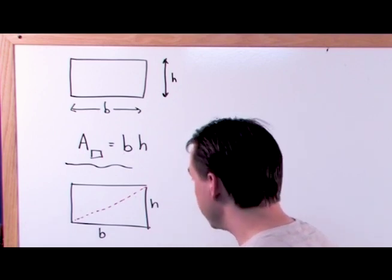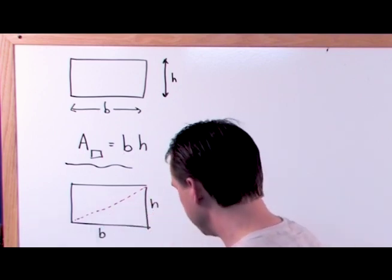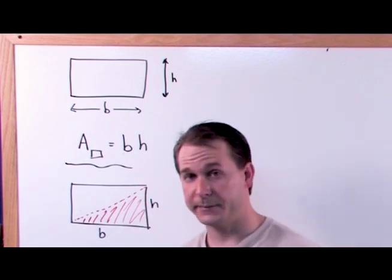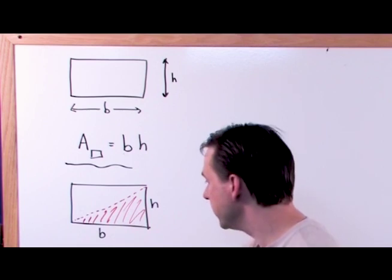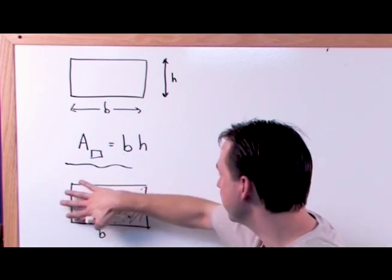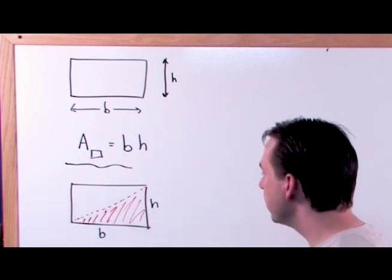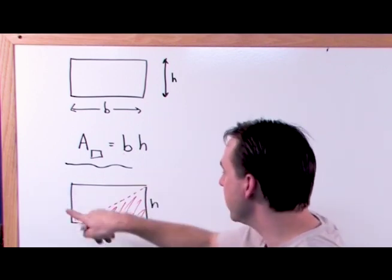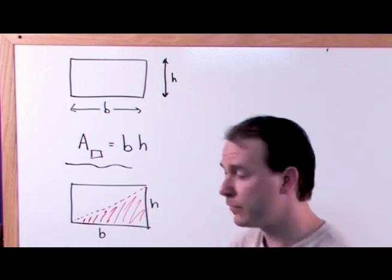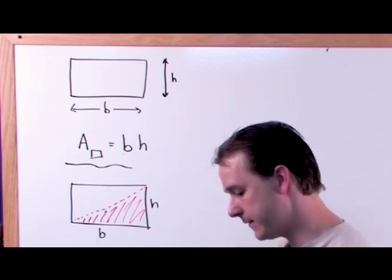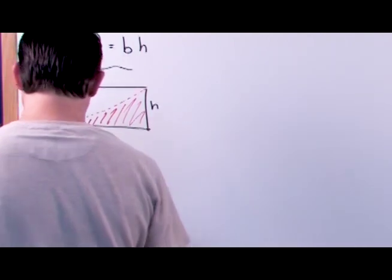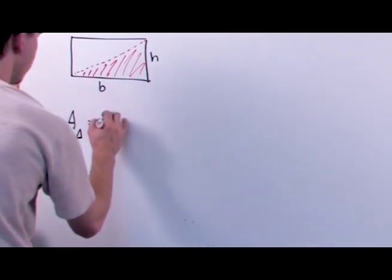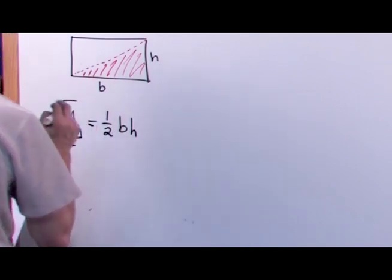If I wanted to calculate the area of just this one triangle — I'll put some shading here — that's what we're trying to do in this section: calculate the area of a triangle. We know the total area of the rectangle is base times height. So the area of this triangle must be one-half times the base times the height, because this triangle is half the rectangle. That is the formula for the area of a triangle.